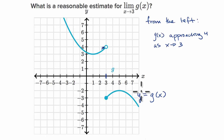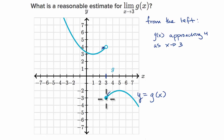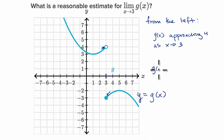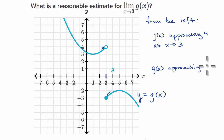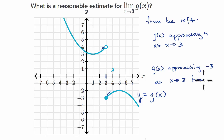Now let's think about it from the right. As x approaches three from the right, what does it look like g of x is approaching? It looks like g of x is approaching negative three as x approaches three from the right. So g of x approaching negative three as x approaches three from the right.